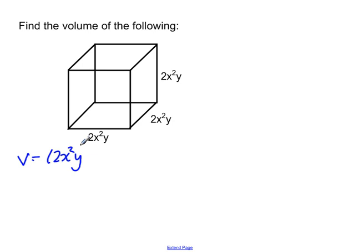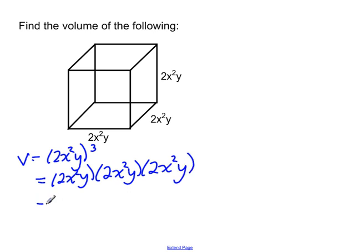2 times 2 times 2 is 8. X squared times x squared times x squared is x to the 6. And y times y times y is y to the 3. That is the volume of that particular figure.